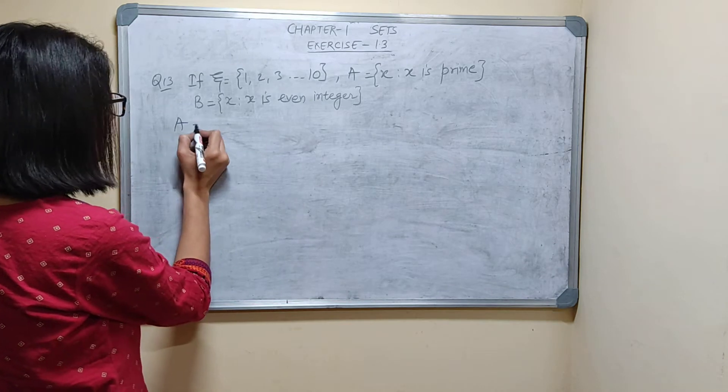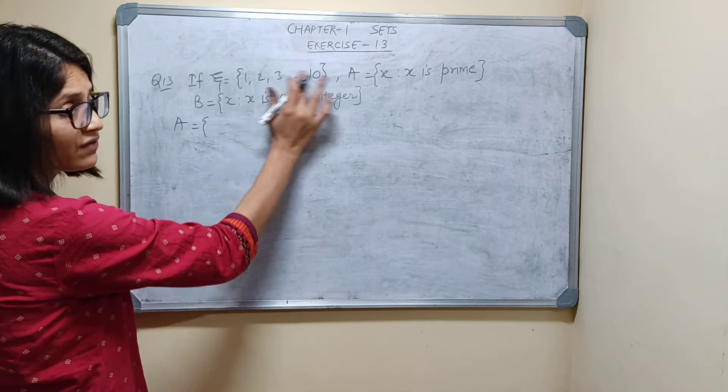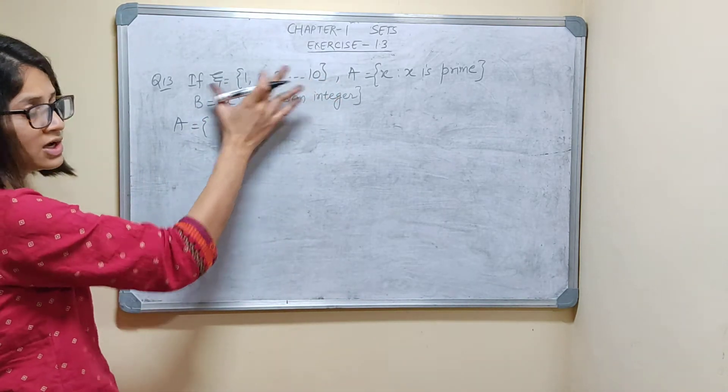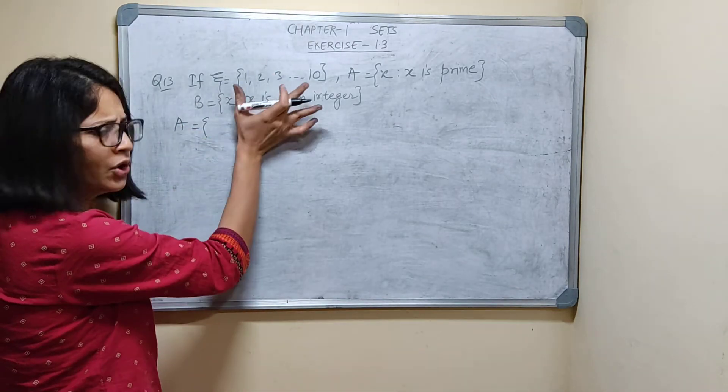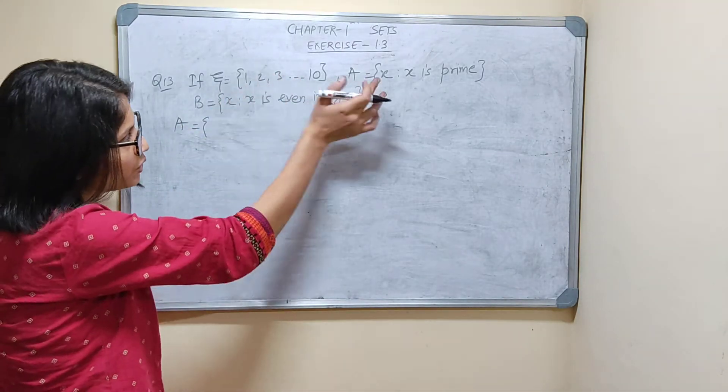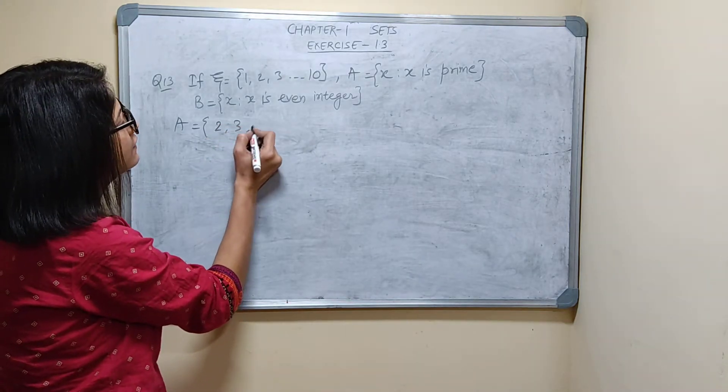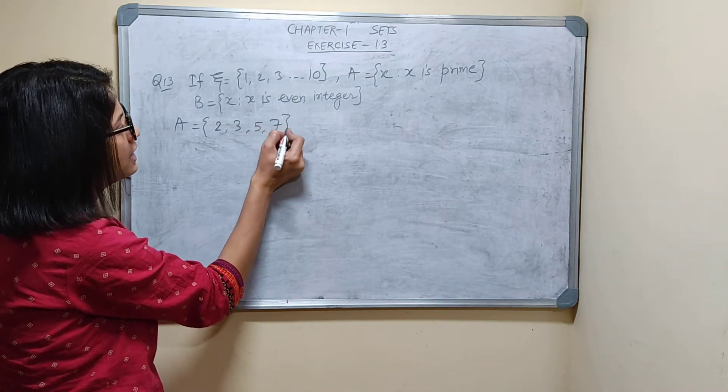I have to write for A. x is prime. So I have to write from this universal set only. This is our superset, or you can say parent set. From this only I have to take. So, 2, 3, 5, and 7.